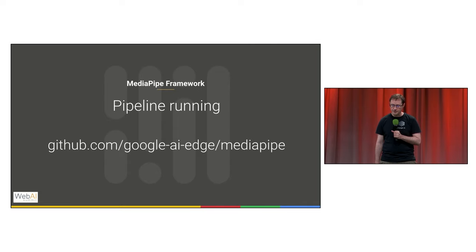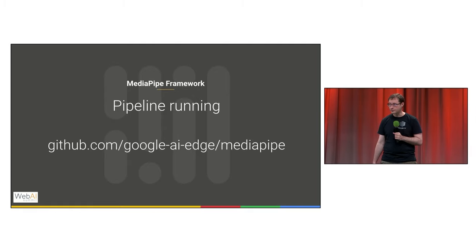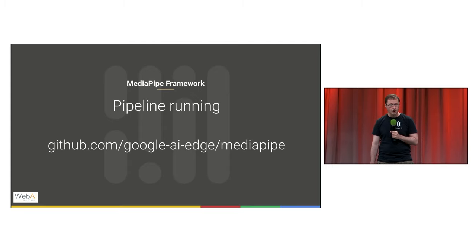MediaPipe enables efficient building and running of pipelines at scale. That means there's a little extra effort involved to run just one pipeline, but then after that it's relatively simple to try ten pipelines, or a hundred, often without even needing to rebuild.